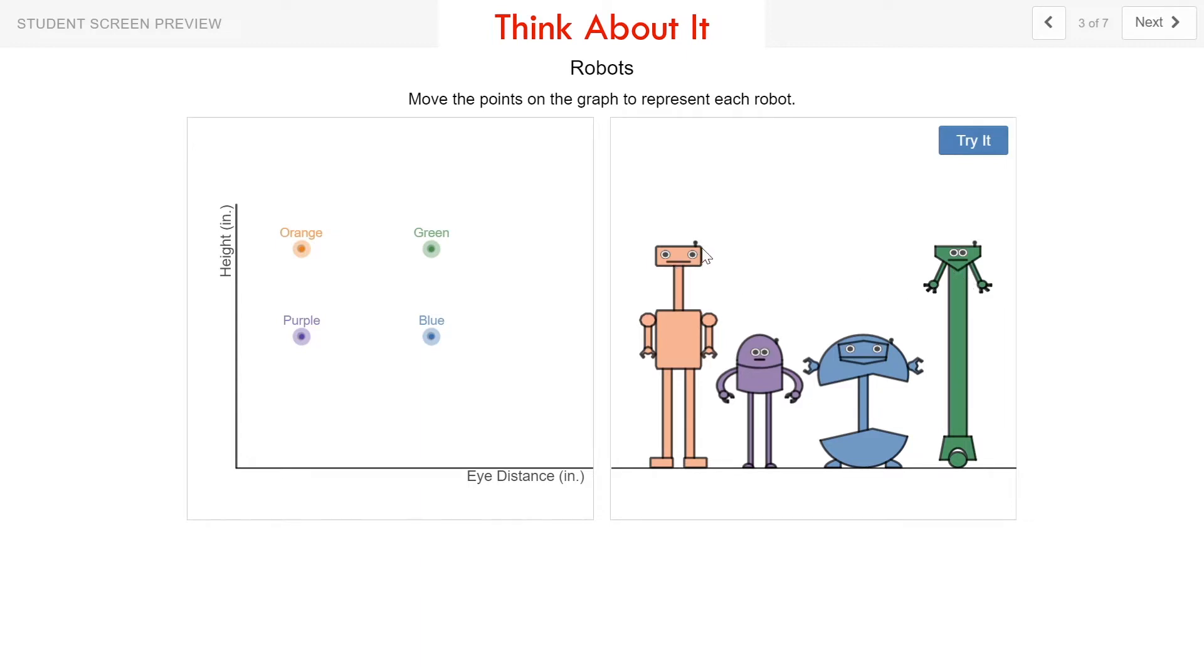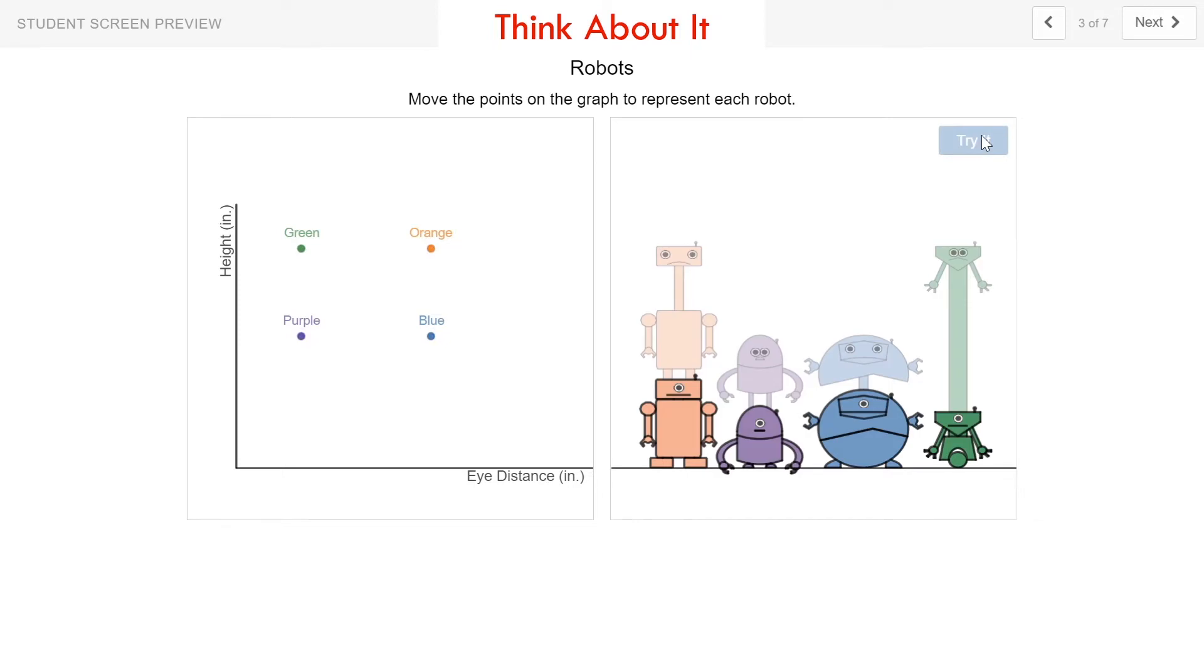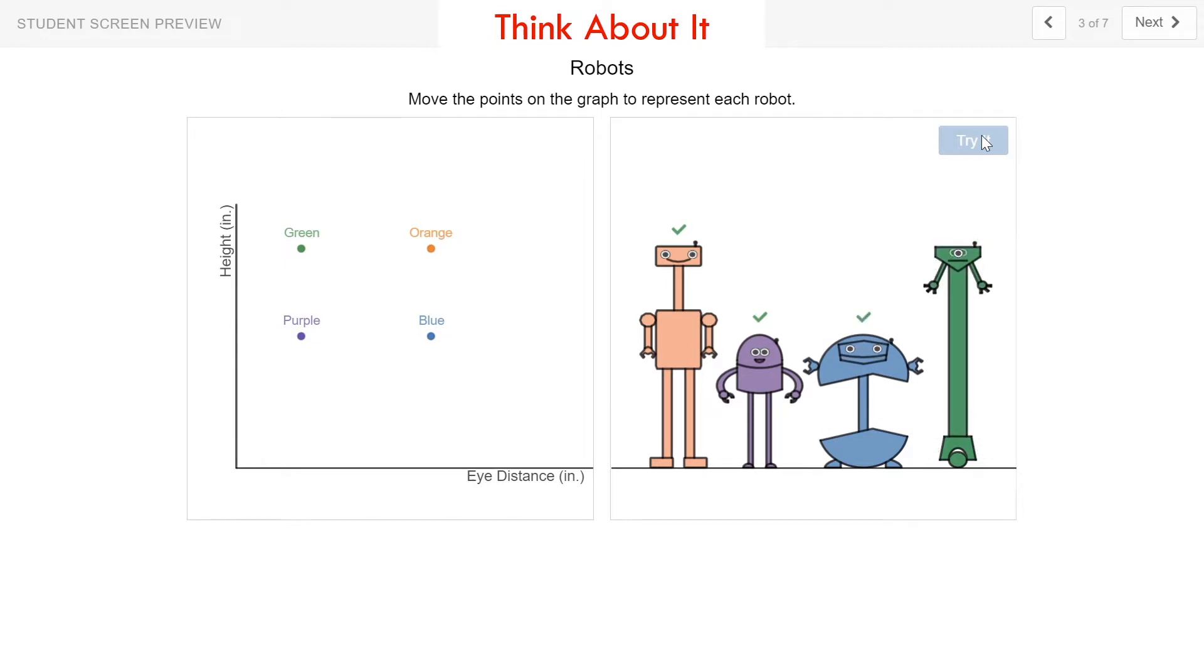The orange robot has eyes that are wider apart than the green robot. But according to the scatterplot that I created, the orange eye distance is very small, and the green eye distance is larger. So I am going to switch my points here. And I'm going to try it again, see if I can get four happy robots. There's one, there's two, there's three, and there's four. All right, four happy robots.